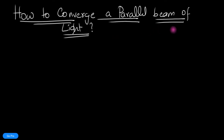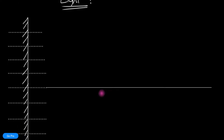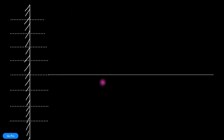How to converge a parallel beam of light — that's the topic of this episode. To understand this, let's begin with something that we have all seen in our life: a plane mirror.